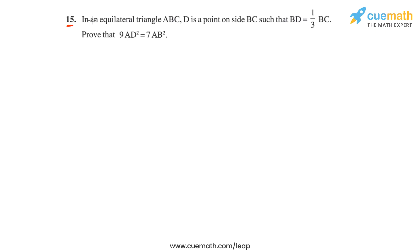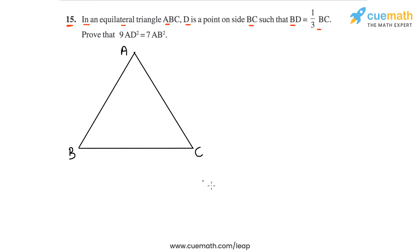Question 15 of this exercise says: in an equilateral triangle ABC, D is a point on side BC such that BD is equal to one-third of BC. Let's first draw a figure corresponding to this statement. Here's an equilateral triangle ABC. Remember that an equilateral triangle has all sides equal and all angles equal to 60 degrees. D is a point on BC such that BD is one-third of BC, so D will be closer to B than to C. Let's place D here, one-third of BC, and join A to D.